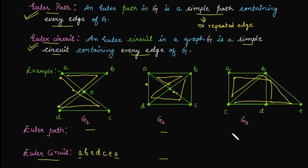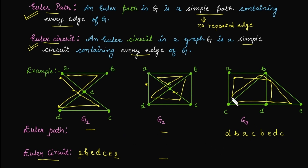The Euler path in G3 is: D→B→A→C→B→E→D→C. This graph has an Euler path, but you can verify that there does not exist any Euler circuit in this case.